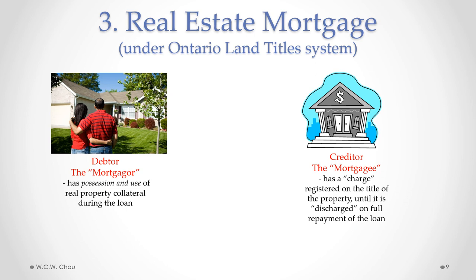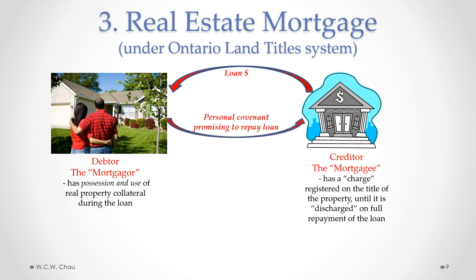Similar to a chattel mortgage is a real estate mortgage, except now the collateral is not personal property but real estate. The type of real estate mortgage described here is under the Ontario Land Title System, which is the predominant system in Ontario. With a real estate mortgage, the debtor is also called the mortgagor and the creditor is called the mortgagee. In exchange for the loan, the mortgagor provides first a personal covenant — a contractual promise — to repay the loan, and also what's called a charge registered on the title of the real property.